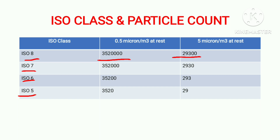Similarly, for ISO 7 it is 352,000 for 0.5 micron and 2,930 for 5 micron. For ISO 6 it is 35,200 and 293 for 5 micron. For ISO 5 it is 3,520 for 0.5 micron and 29 for 5 micron.